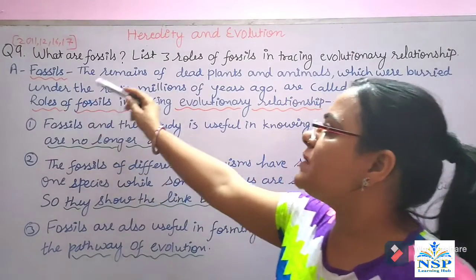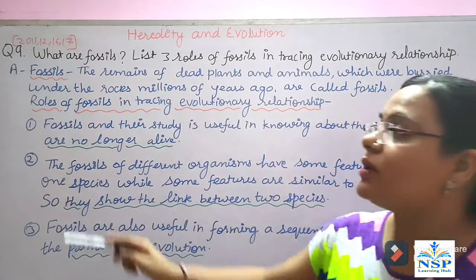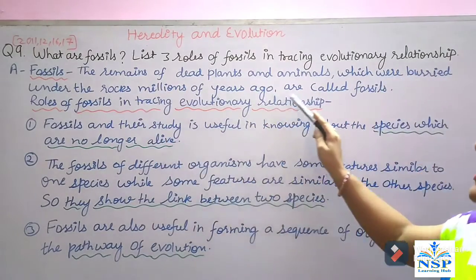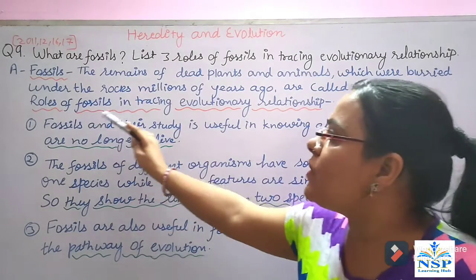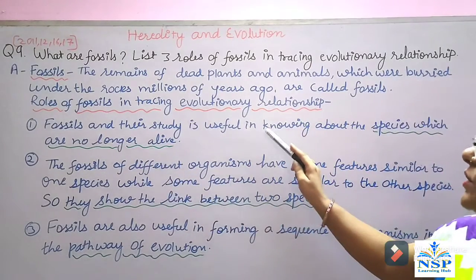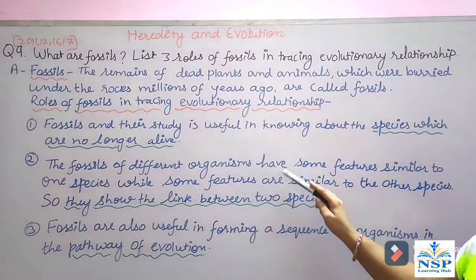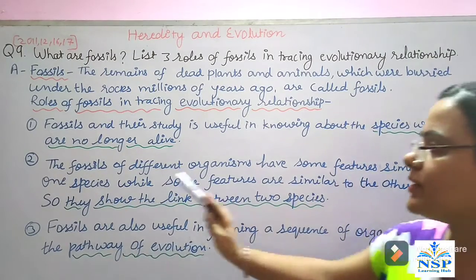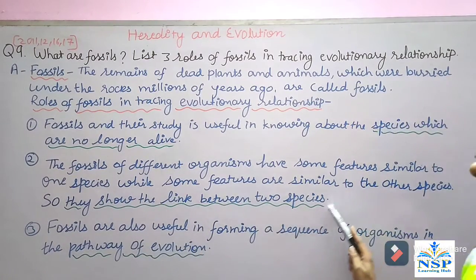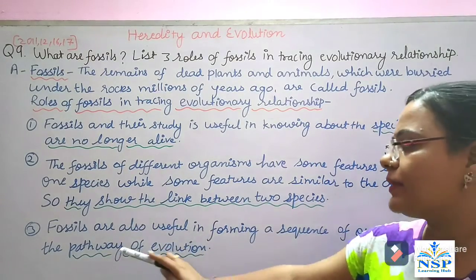Our next question: What are fossils? List 3 roles of fossils in tracing evolutionary relationships. Fossils are the remains of dead plants and animals buried under rocks millions of years ago. Their roles: First, fossils help us know about species that are no longer alive. Second, fossils of different organisms show features similar to one species and other species, revealing the link between two species. Third, fossils are useful in forming a sequence of organisms in the pathway of evolution.